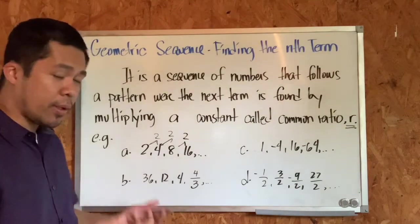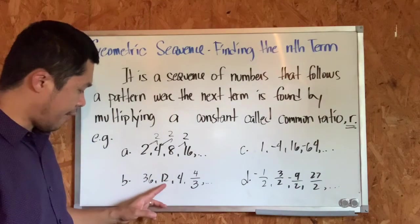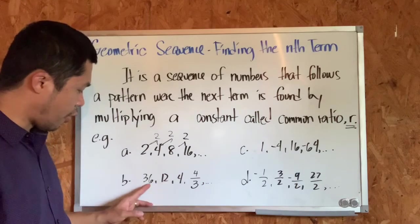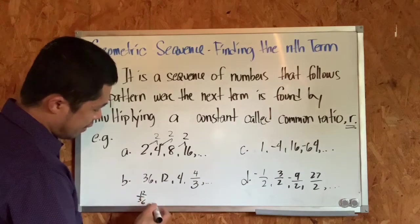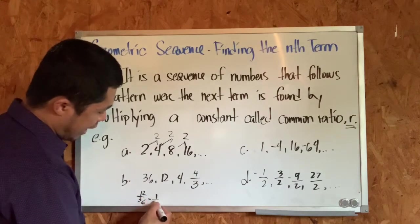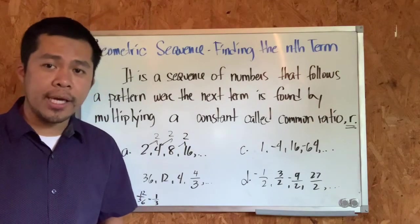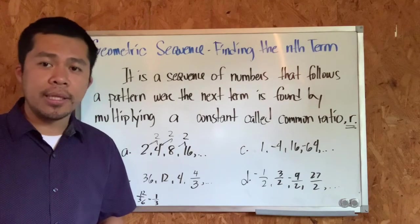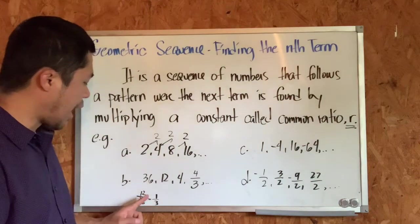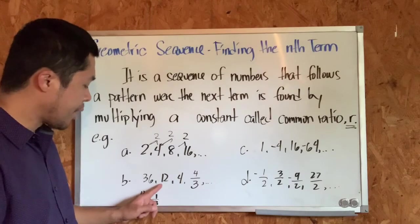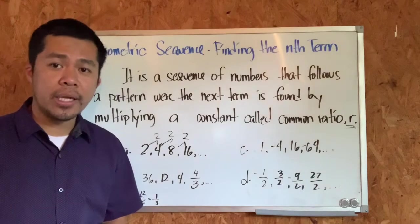To get the common ratio of letter B, we divide any two succeeding terms. Dividing the second term by the first: 12 divided by 36 simplifies to one-third. So one-third is the common ratio. Yes, it is possible for the common ratio to be a fraction. So 36 times one-third is 12, times one-third is 4, times one-third is 4/3.